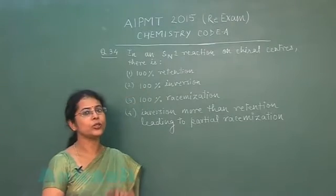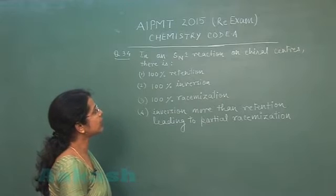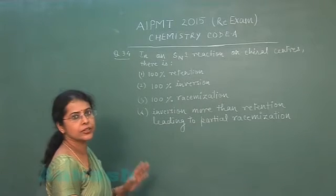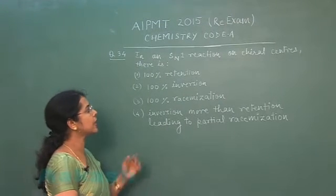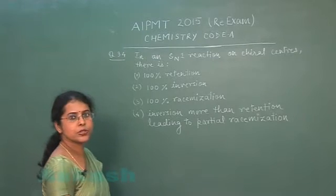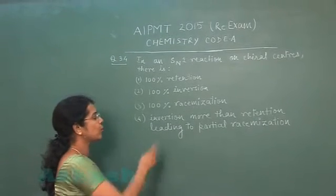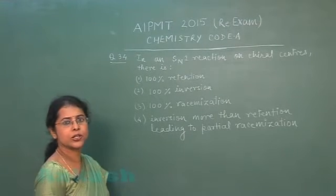So moving to the next question, question number 34. In an SN1 reaction on chiral center, there is first option 100% retention, second option 100% inversion, third option is 100% racemization and fourth one is inversion more than retention leading to the partial racemization.